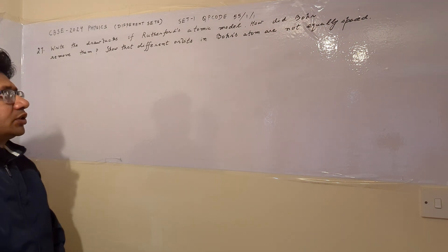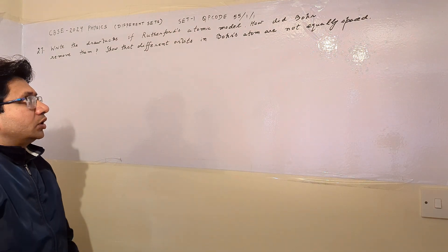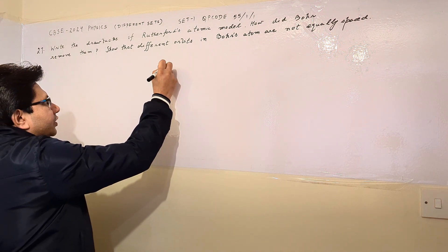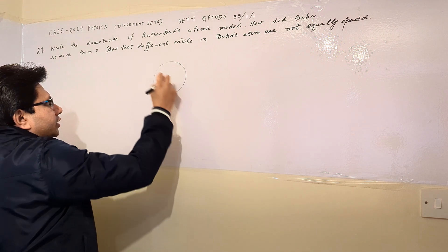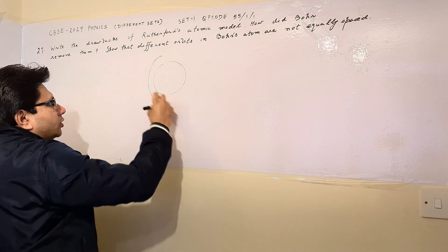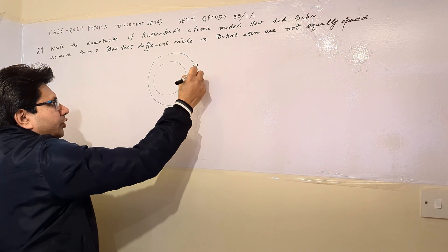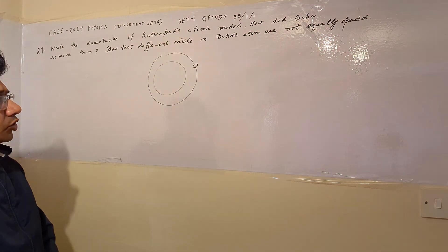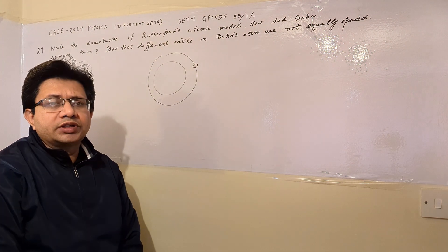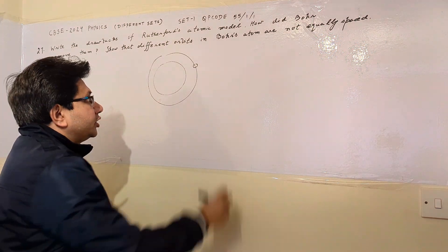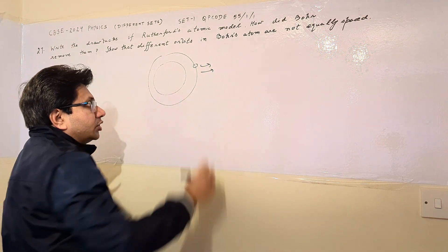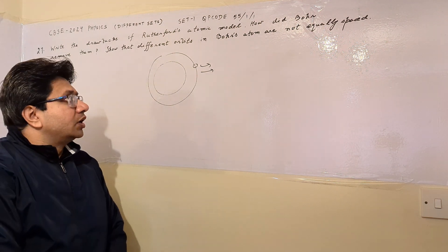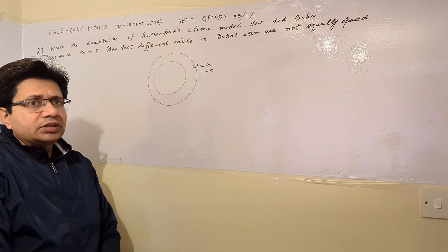There are certain drawbacks corresponding to the Rutherford atomic model. According to this model, charges are moving in an accelerated manner around the nucleus. According to electromagnetic theory, when charges move in an accelerated manner, they continuously radiate energy.